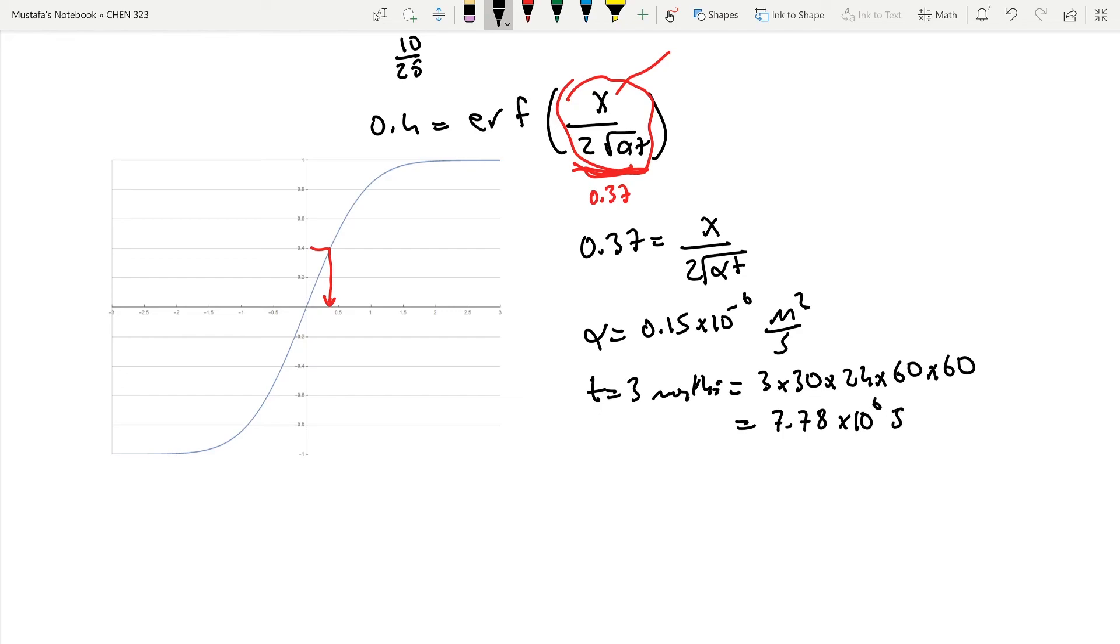So now I have T given, alpha given. The only thing that is left is to find X. And if you carry out the algebra, you'll get 0.8 meters. This is the minimum depth we have to bury this pipe to make sure there is no freezing within 3 months.